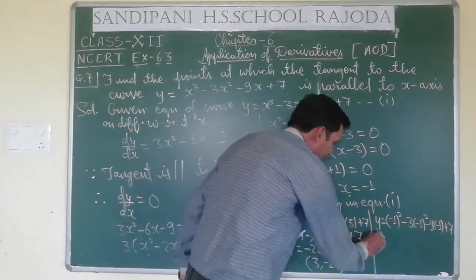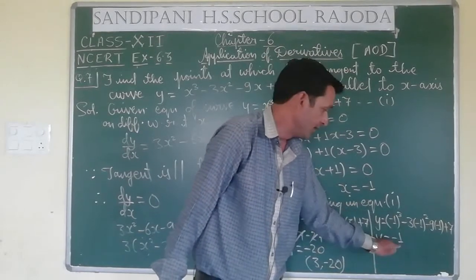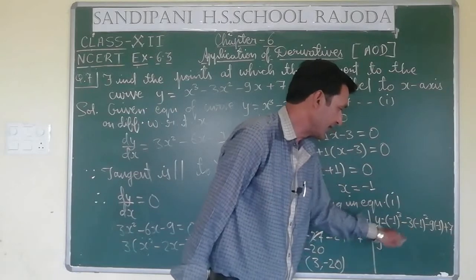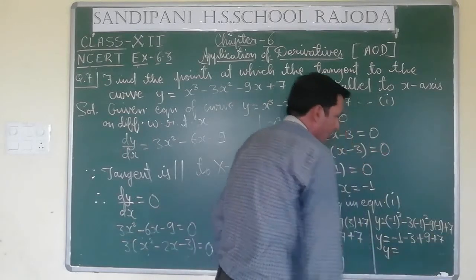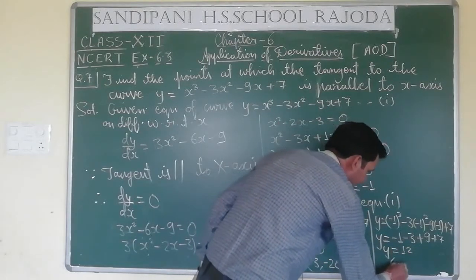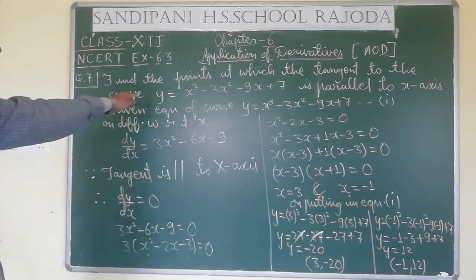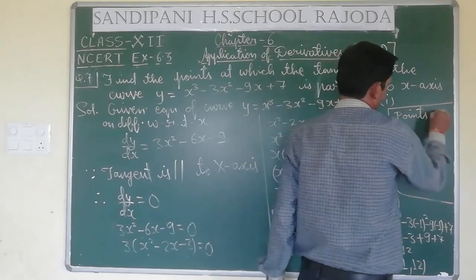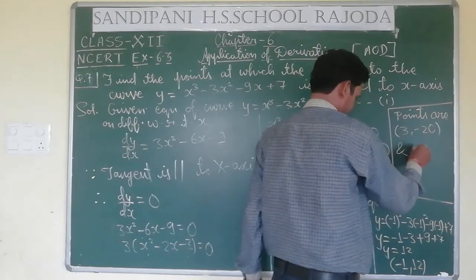For x = -1: y = (-1)³ - 3(-1)² - 9(-1) + 7 = -1 - 3 + 9 + 7 = 12. So the point is (-1, 12). Therefore the points at which the tangent is parallel to the x-axis are (3, -20) and (-1, 12).